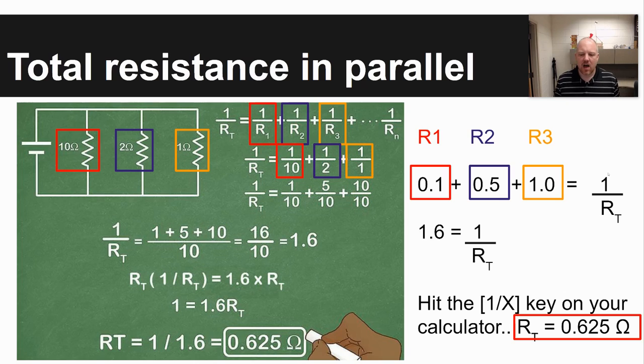And so what you need to do with that decimal is hit the invert key or one over X key that's on your calculator. Or you can just type in one divided by 1.6 to come up with your total resistance. That's 0.625 ohms.